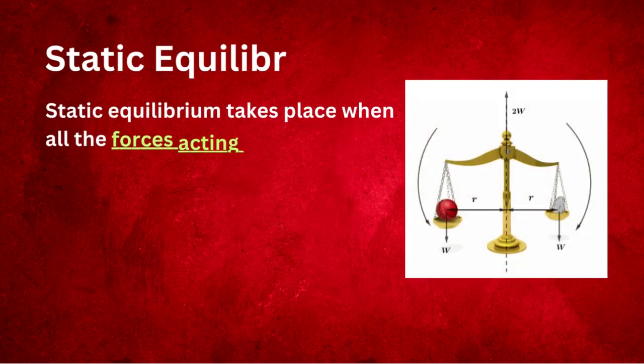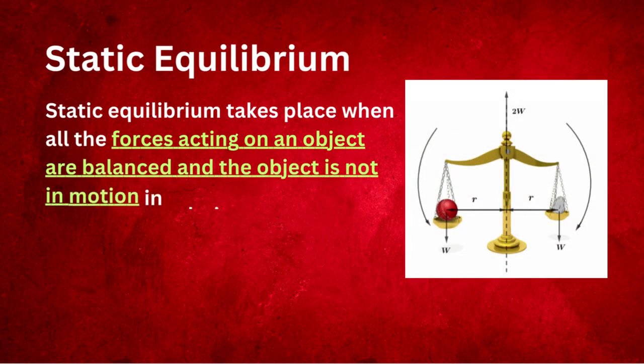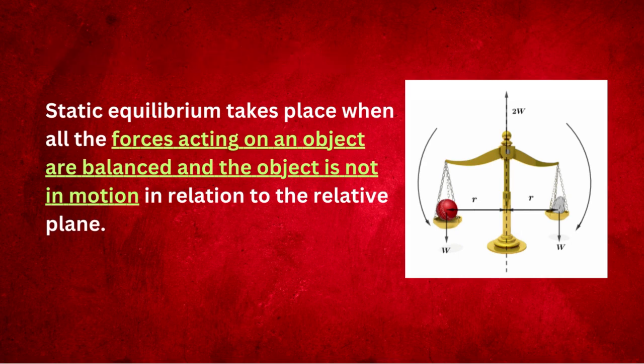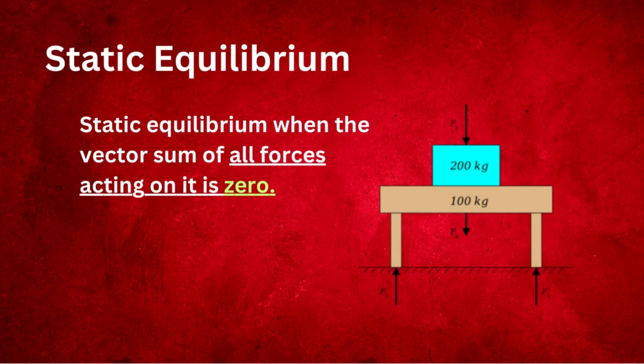Static equilibrium: It takes place when all the forces acting on an object are balanced, and the object is not in motion in relation to the relative plane. An object is in static equilibrium when the vector sum of all forces acting on it is zero.